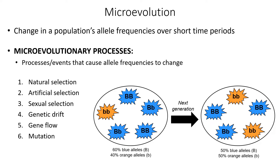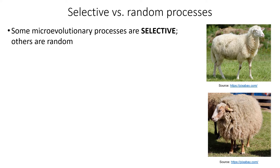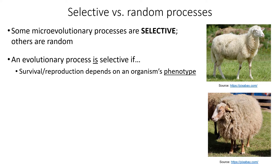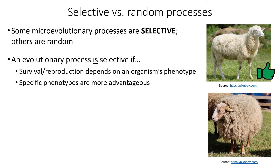Before we get into that, we need to go over the concept of selective versus random processes. Some of the microevolutionary processes we're going to learn about are selective, and others are random. An evolutionary process is considered selective if survival and reproduction depend on an organism's phenotype — if specific phenotypes are more advantageous for survival and reproduction. Let's take a look at these sheep: if individuals with shorter fleece consistently survive and reproduce more than individuals with thicker, longer fleece, we would say that the population is experiencing a selective process in which shorter fleece is more advantageous.